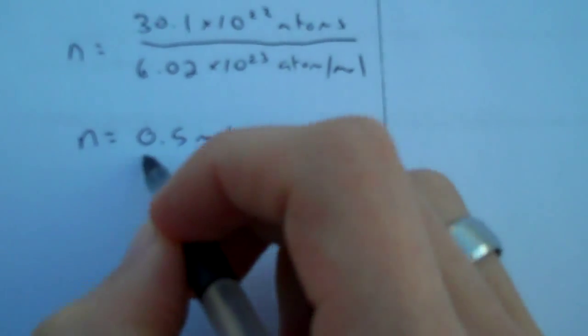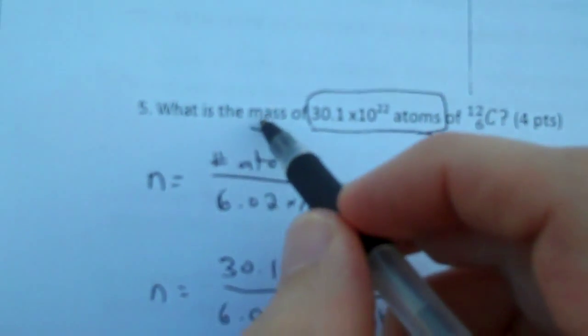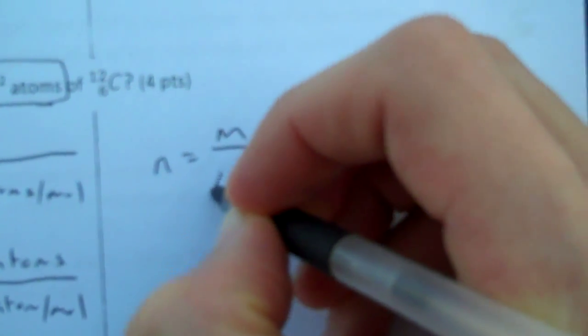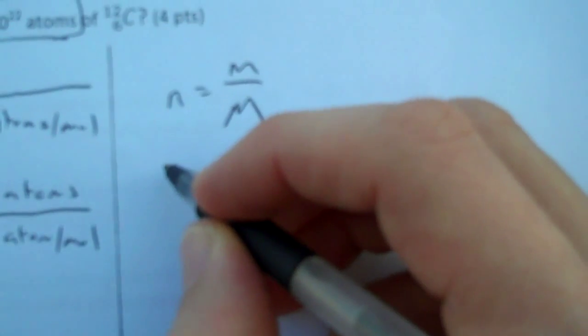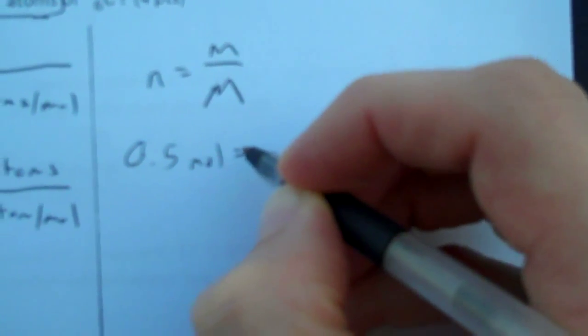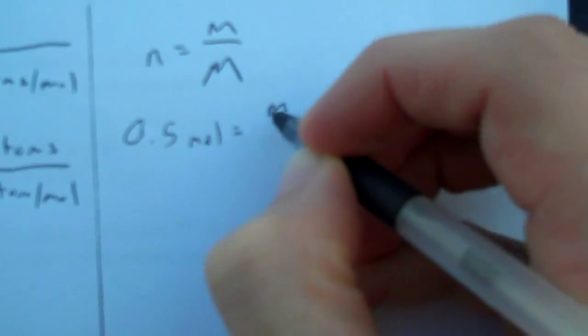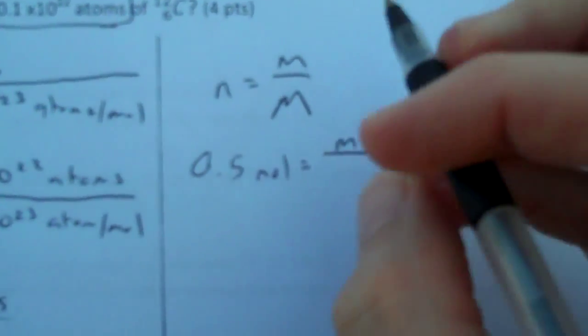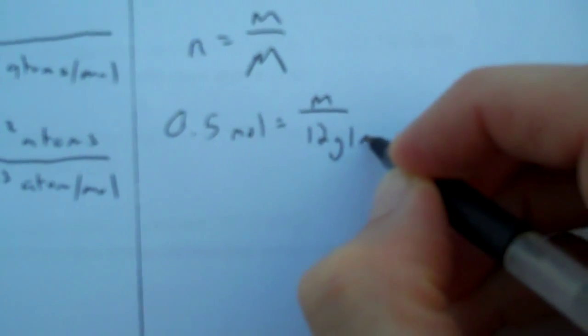But I'm not done. Now I have moles, and I need mass. So I'm going to use my other equation, n equals little m over big M. I now have n, 0.5 moles. I'm looking for mass, that's my unknown. And my molar mass is given to me by the mass number 12, 12 grams per mole.